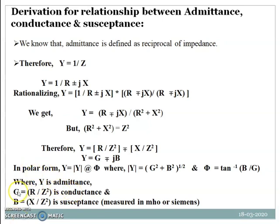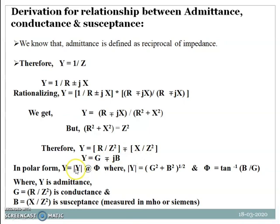Note that the generalized definition of conductance as reciprocal of resistance applies to DC circuits. For AC circuits, G equals R by Z squared. For DC circuits, since Z equals R, G equals R divided by R squared, which gives G equals 1 by R. So for DC: G equals 1 by R; for AC: G equals R by Z squared. The derivation starts with Y equals 1 by Z, rationalize, and arrive at Y equals G minus or plus jB.